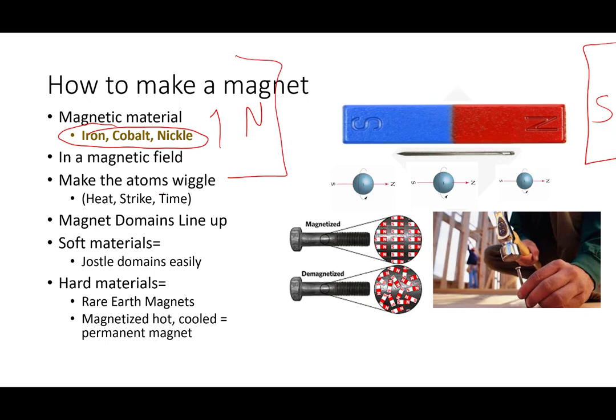Then you have to make the atoms within it wiggle. How do you make them wiggle? Well, they start out all higgledy-piggledy, pointing in all these different directions. And you want them to line up in this magnetic field. How do you do that?